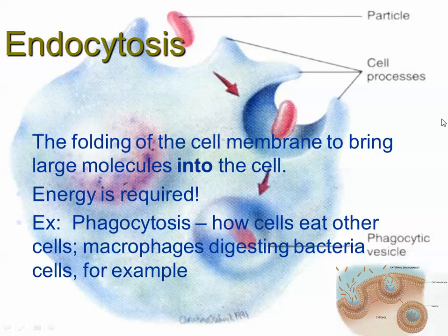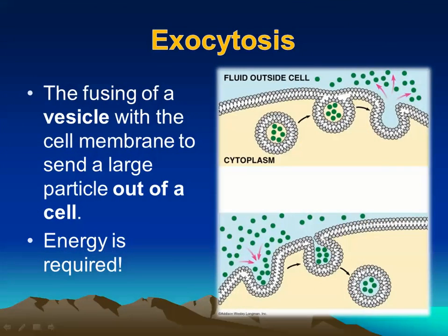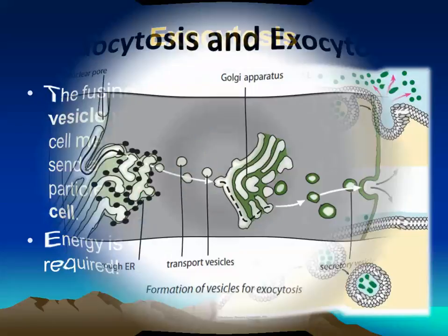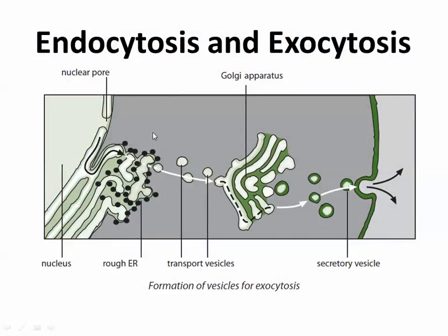Moving something into a cell by the inward folding of the plasma membrane is endocytosis. The opposite is exocytosis — a vesicle moves toward the plasma membrane, and because they're made of the same material, the membranes fuse and the contents are released outside. When a vesicle fuses with the plasma membrane, the plasma membrane gets a tiny bit larger; when membrane is pinched inward for endocytosis, it gets a tiny bit shorter. Both processes require energy and are forms of active transport.